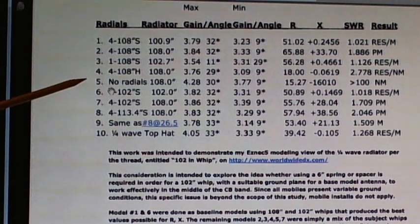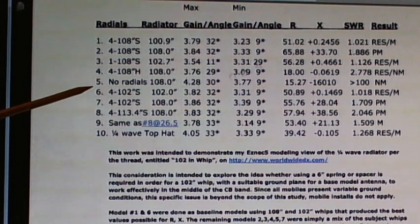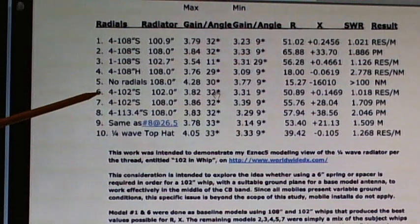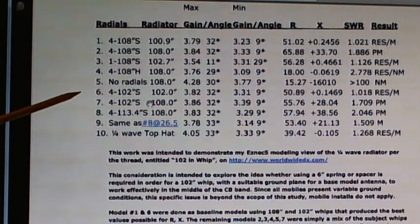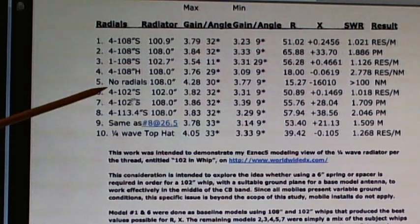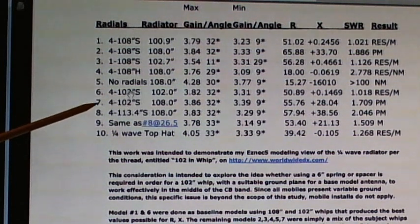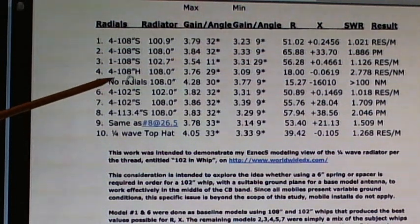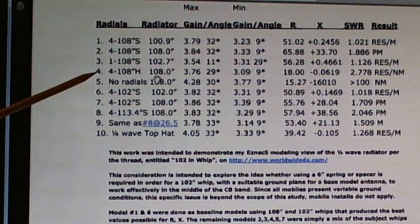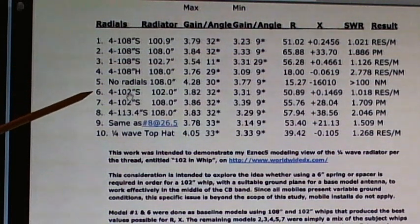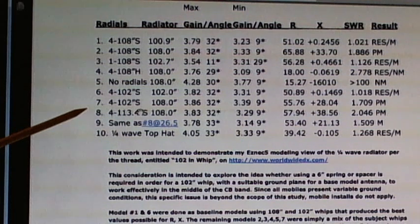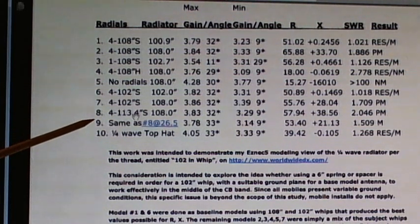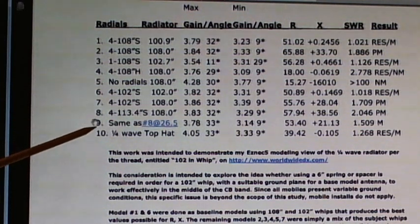I'm going to rush on through this because I don't have much time. Now, number 1 and number 6 are baseline models. They're both almost perfect antennas for resonance and resistance. Now, the 2, 3, 4, 5, and 7 are a mix and match of either 108 or 102 or some version thereof. 108 and 108 here, 108 here, and 102 here, and down here. It's 102 over here and 108 over here.